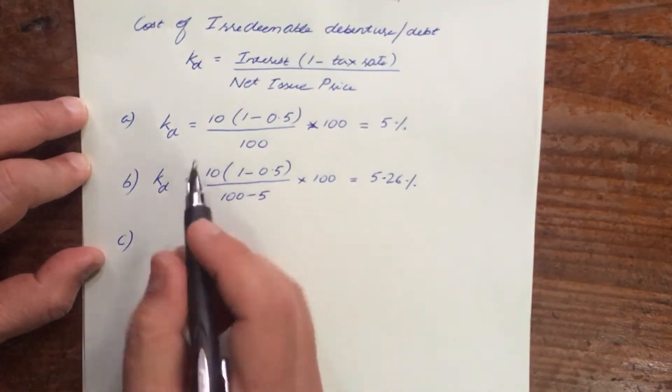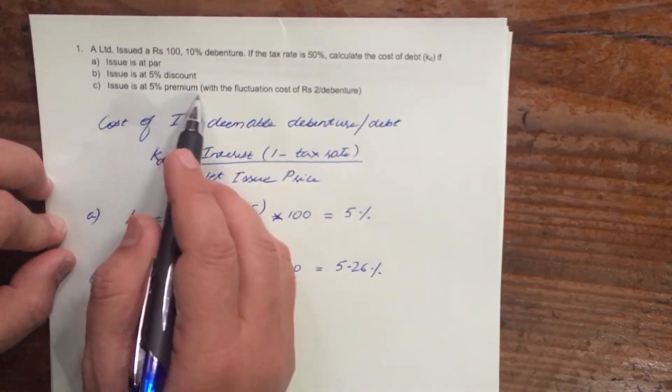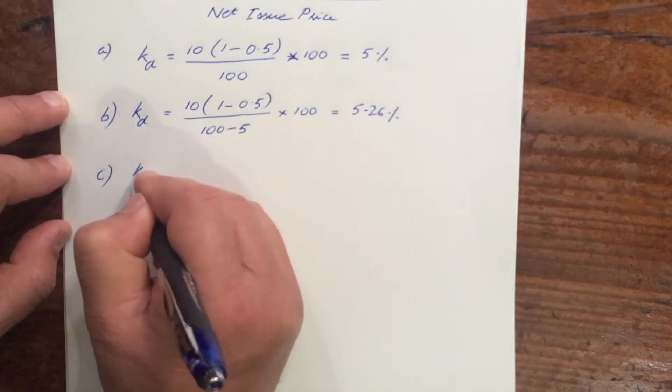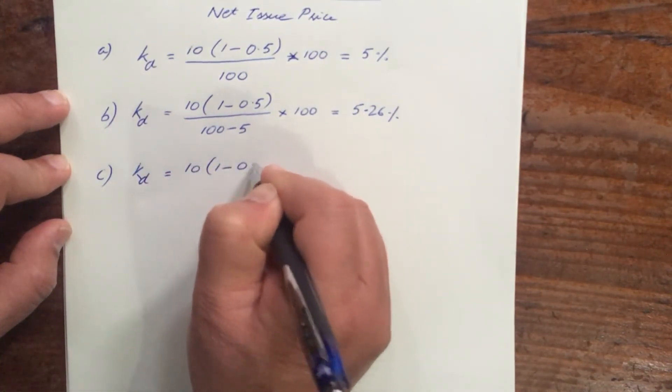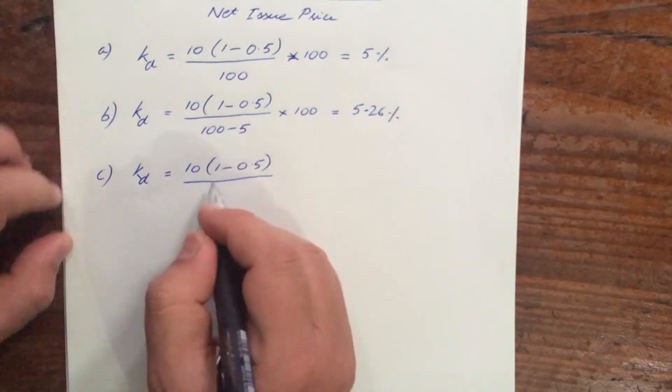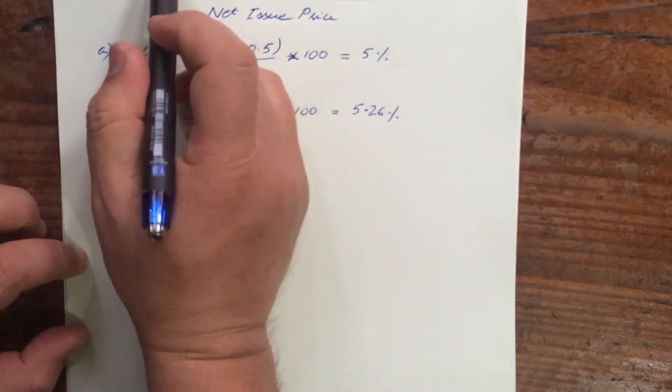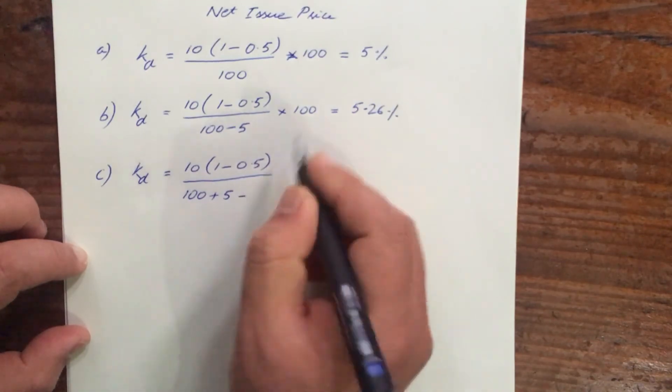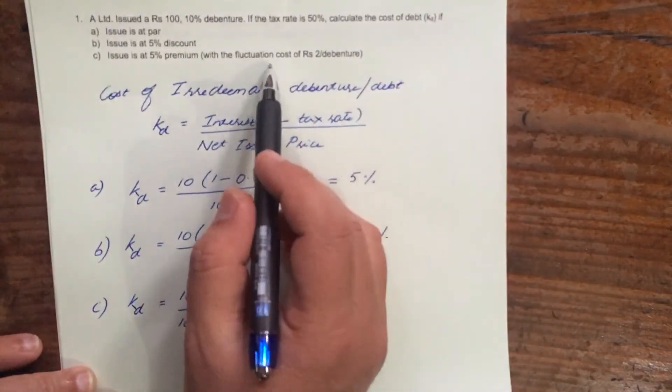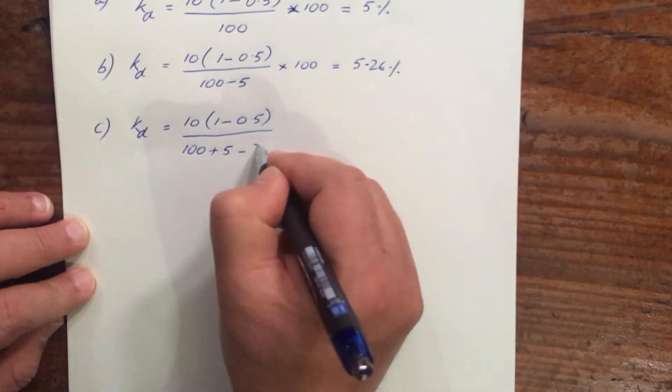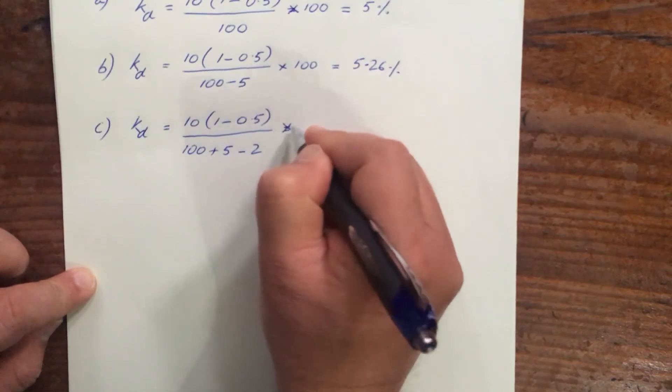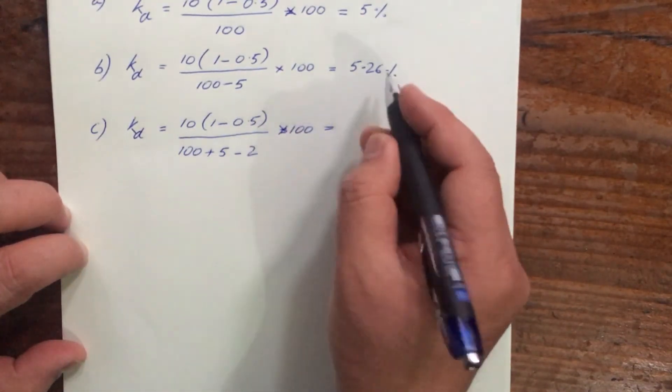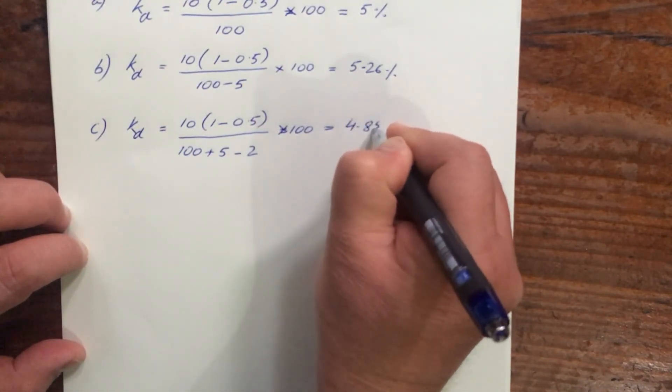And the third one, issue is at 5% premium with flotation cost of 2 rupees per debenture. So Kd here will equal 10 times (1 - 0.5) - the numerator remains the same, what will change is the denominator. It's 100 plus 5% premium, so 100 plus 5, minus the flotation cost of 2 rupees. So finally, if you do your calculation, it will be 4.85%.